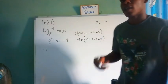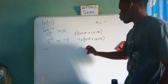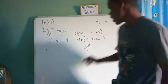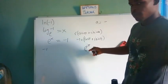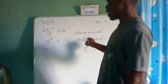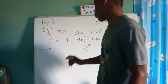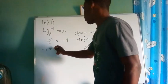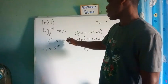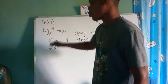Having expressed negative one as cosine(π) + i·sine(π), we can also write that in Euler's form, which gives us e raised to the power iπ. Here i is the complex number and π is the argument we get from expressing negative one in polar form. So negative one is the same thing as e to the iπ, and in place of negative one we can substitute e to the iπ.